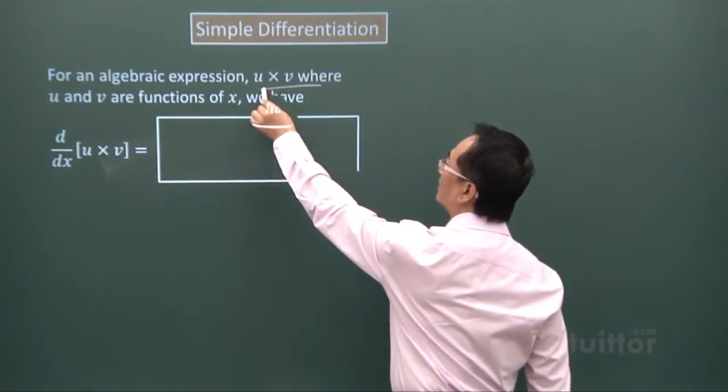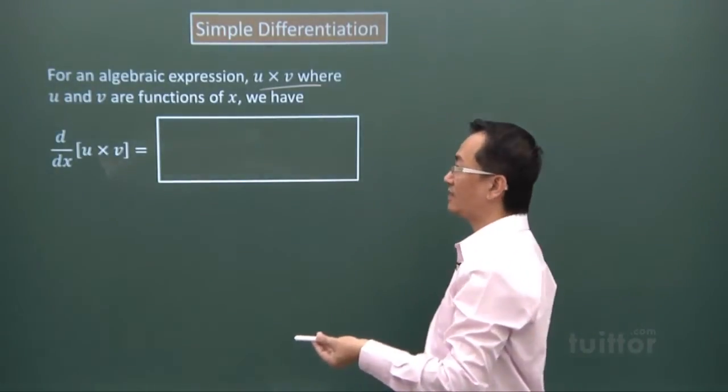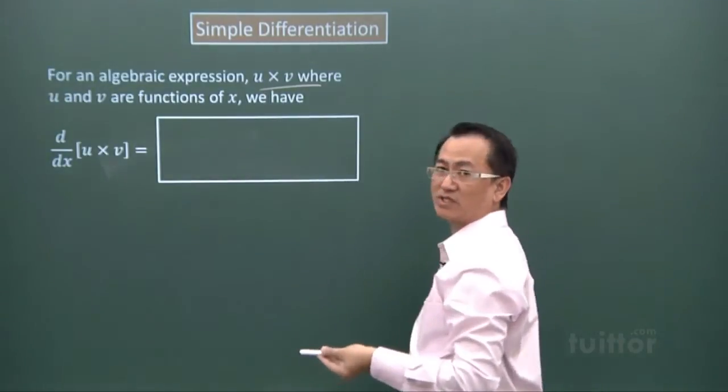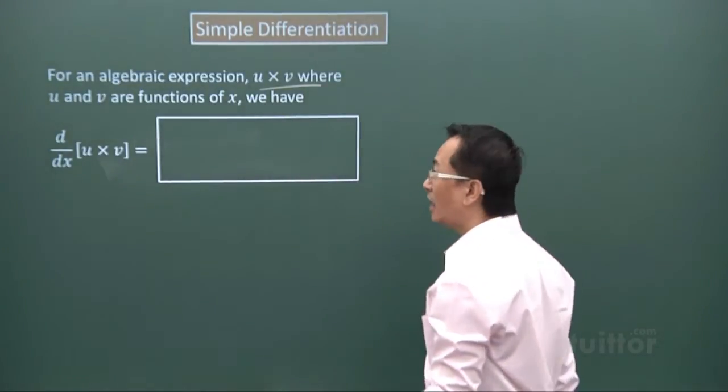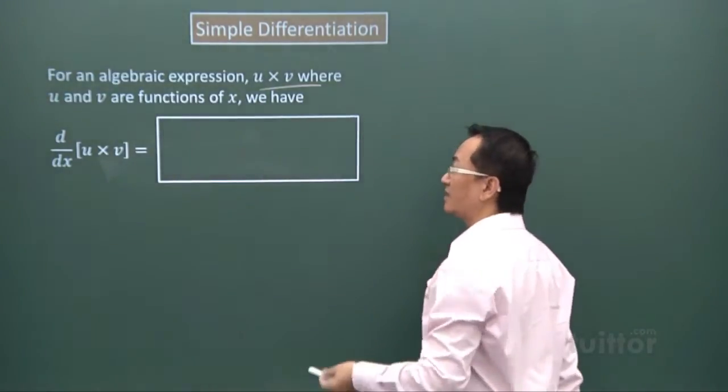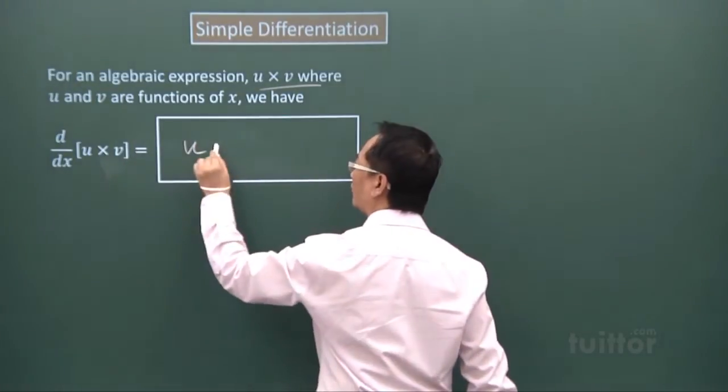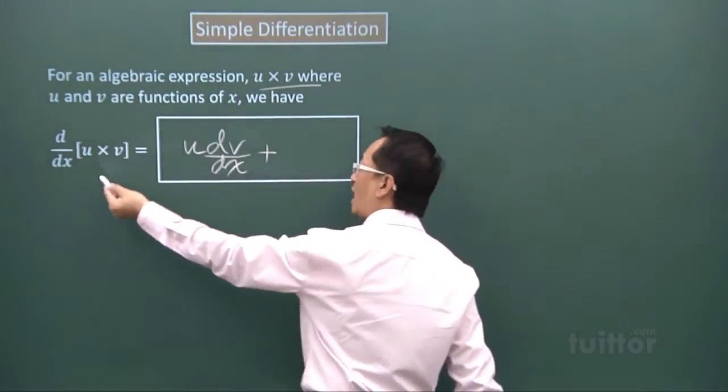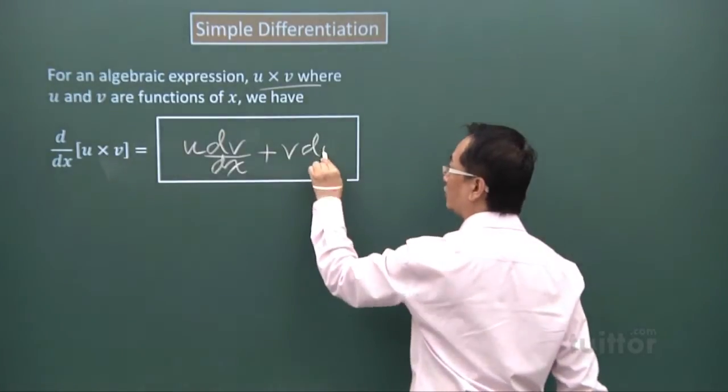Sometimes you are just given the expression u times v. The symbol will not be dy over dx anymore because we don't refer to y, there's no y expression, but we refer to the product of u and v. The expression over here will still be the same - maybe we take it as a record session: u we keep, then differentiate v dv over dx, plus the first time we kept u, now we keep v but we differentiate the u expression.